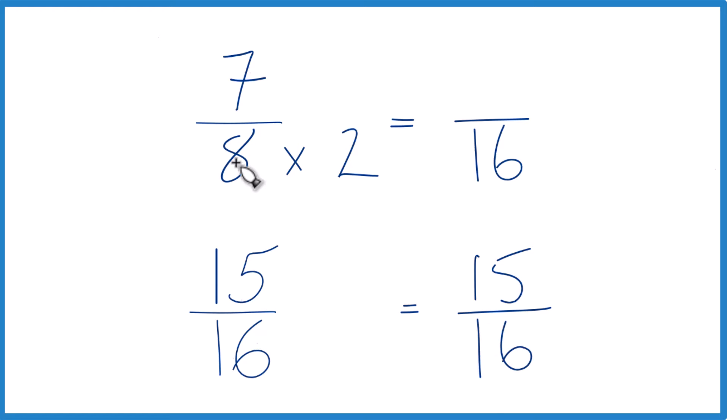And since we multiplied 8 times 2 here, we do need to multiply the numerator times 2 as well. 2 over 2, that equals 1, so we're just multiplying this by 1, doesn't change the value, just the way it's written.